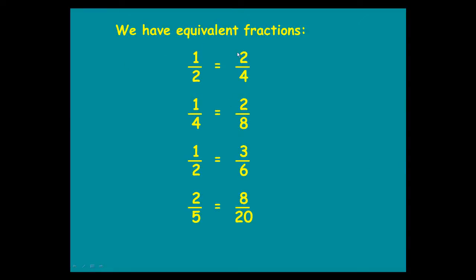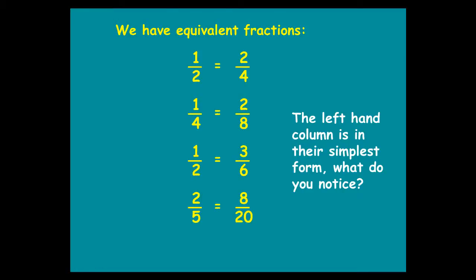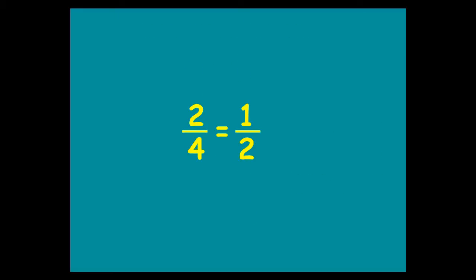Now, if you look at the right-hand column and ask yourself, how do you go from the right-hand column to the left-hand column? You see here, for example, in the top fraction, two quarters — you just divide the top and the bottom by the same number, in this case 2, and you get to 1 over 2. In this one, you divide top and bottom by 3, and you get 1 over 2. In this one, you divide top and bottom by 4, and you get from 8 to 2 and from 20 to 5. So, to simplify a fraction, what you want to do is divide the top and the bottom by the same number until you can't do it anymore.